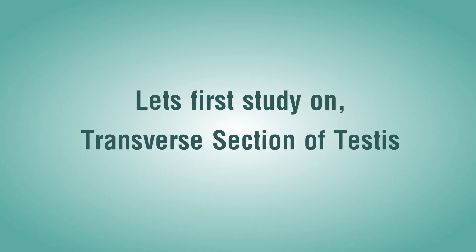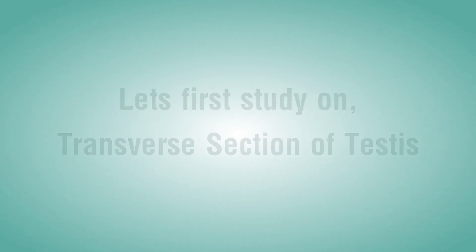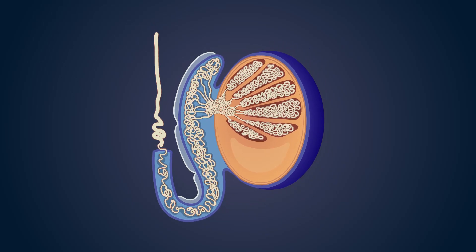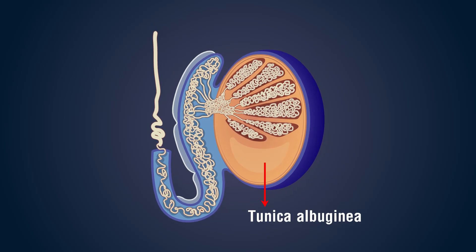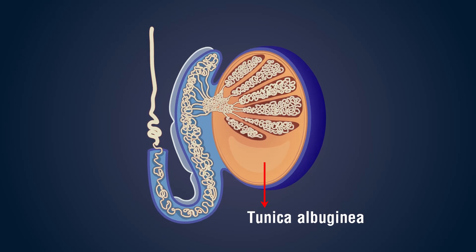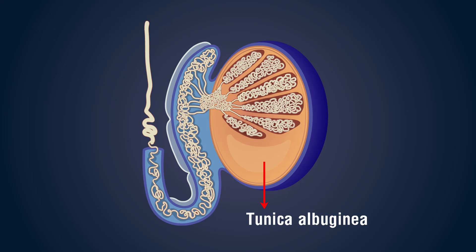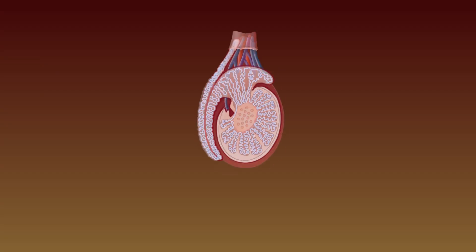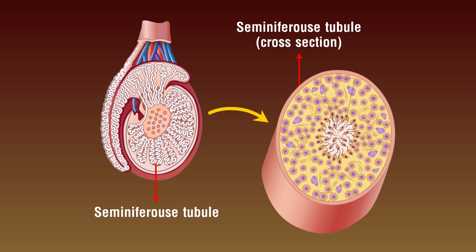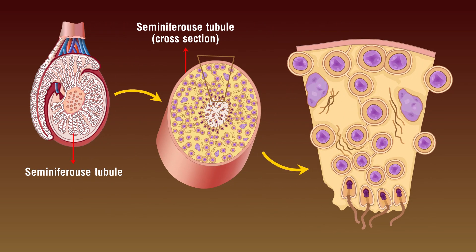Let's first study the transverse section of testes. The testes are covered by dense fibrous fibers known as tunica albuginea — a capsule of thick connective tissue which encloses a matrix or interstitium. The interstitium encloses numerous minute microscopic structural and functional tubules called seminiferous tubules.